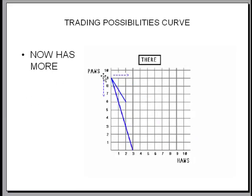And over here, if the country over there gives up three paws and they get two haws in return, they are now consuming above their original trading possibilities curve so they're way out ahead.